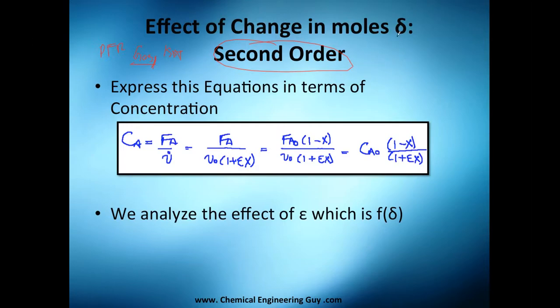We want to analyze the effect of change in moles. So for example, I have A and it's turning to 2B. I have an overall change of 1 mole because I have 2 moles at the end and 1 mole at the beginning, so I'm duplicating the amount of moles.